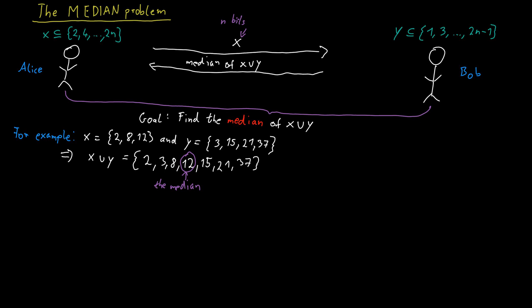For example, she would say 2 is in the set, so that's a 1; 4 is not in her set, that's a 0; 6 is not in her set, that's a 0; but 8 is in the set, so that's a 1, and so on. She communicates n bits to Bob, then Bob computes the median and transmits the result back to Alice. There are 2n numbers that could potentially be the median, and to encode a number between 1 and 2n we need log(2n) many bits. So Bob needs to transmit back at most log(2n) bits, giving a total of n + log(2n) many bits.